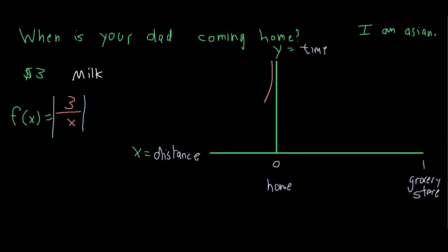If we graph that out, the function looks something like this. In order to find out when your dad arrives home, we must take the limit as x goes to 0 of the function f of x.